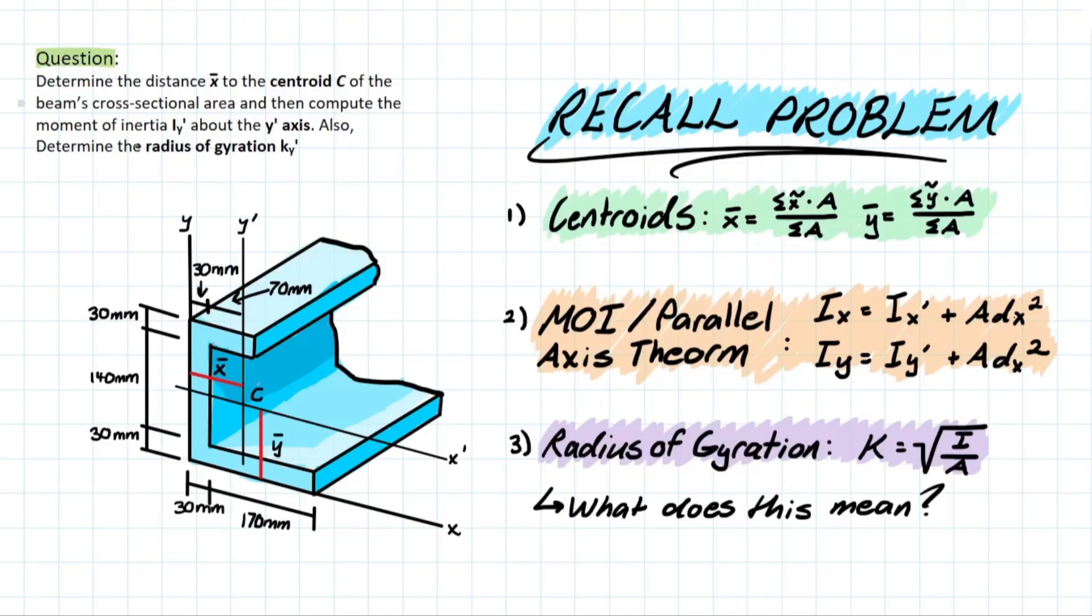Then it wants us to compute the moment of inertia I y prime, which is the moment of inertia with respect to this y prime axis, as it says right here. And also it wants us to determine the radius of gyration, k y prime.